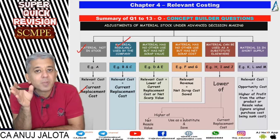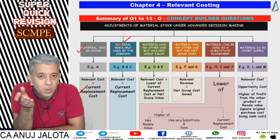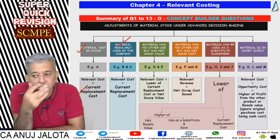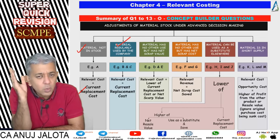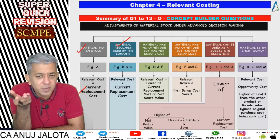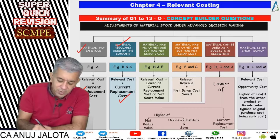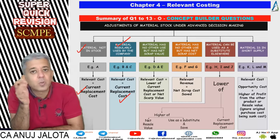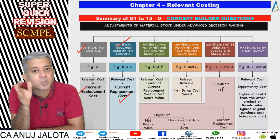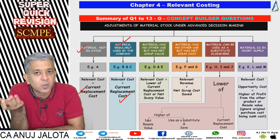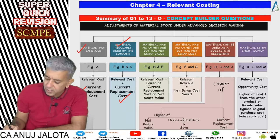Second case: if the material is regularly used by the company, and you use it for this offer, you will have to buy more from the market for your regular business. So therefore, your relevant cost will again be equal to the current replacement cost — whatever it will cost to buy from the market right now.